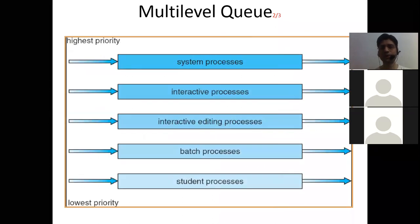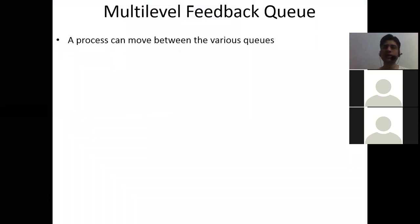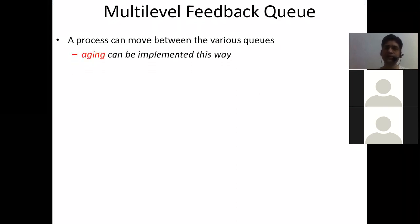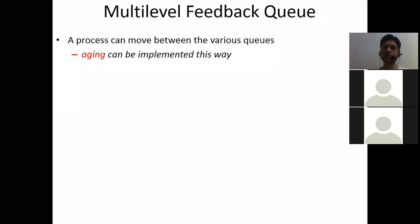So we came up with the idea of multi-level feedback queue. In multi-level feedback queue, we give processes the flexibility to move between the queues that we have derived in the ready queue, so that we can implement the concept of aging — we can gradually increase the priority of processes, and also have flexibility to demote them to a lower priority if we are not currently working on those processes. A process can move between various queues. In this manner, we can implement aging. Aging is the solution to starvation.